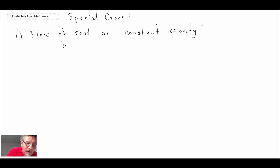So if the flow is at rest, the acceleration vector a is going to be zero, and del squared V is going to be equal to zero as well.